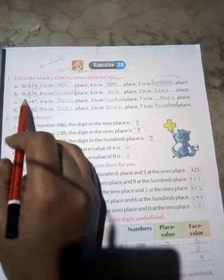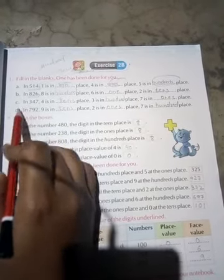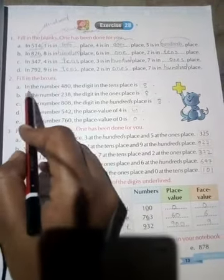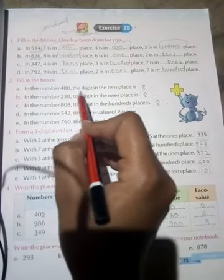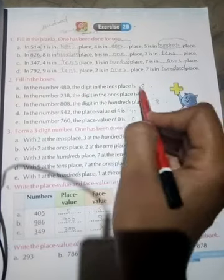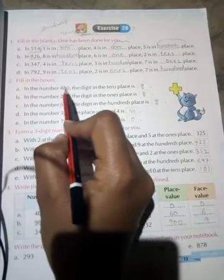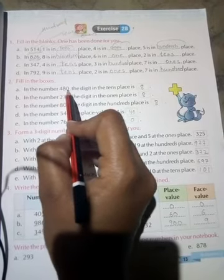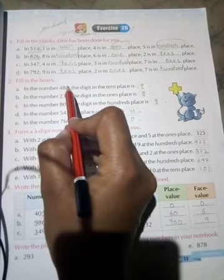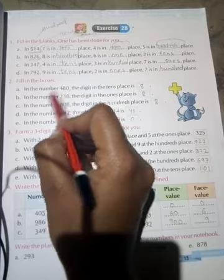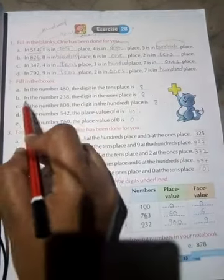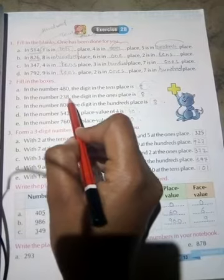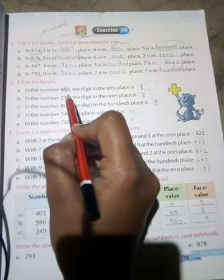As it is, you have to solve it yourself. In the next question, fill in the boxes. In the number 480, the digit in the tens place is 8. In the number 238, the digit in the ones place is 8.